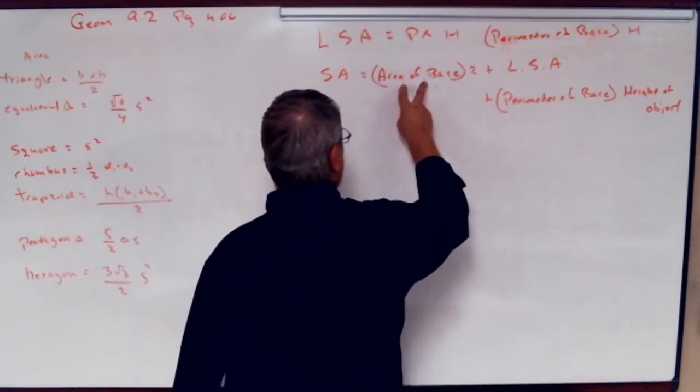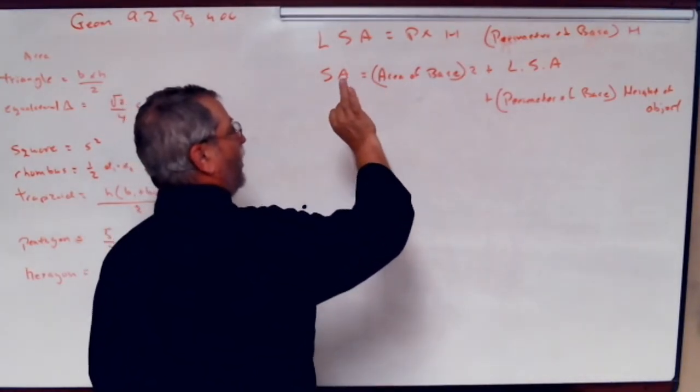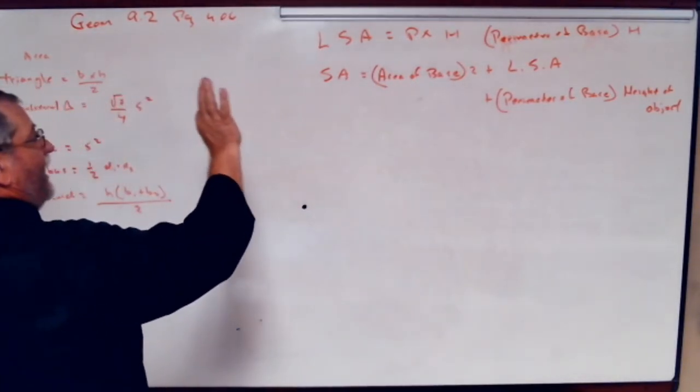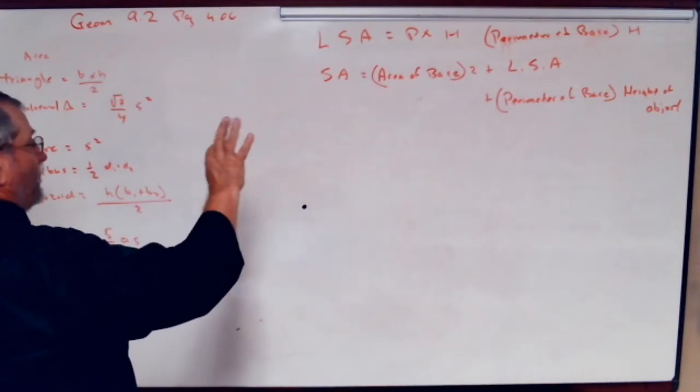Now, when we say area of the base, we have triangles, we have rectangles, and we have circles. Those are what we have.